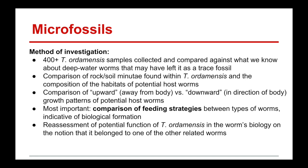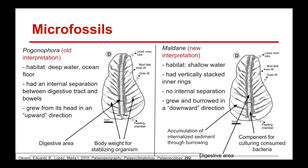The old interpretation was that Tassilia ordemensis was made by a creature in the Pogonophora class — a deepwater worm that lives near or inside the ocean floor. It has an internal separation between its digestive tract and its bowels, and it grew from its head in an upward direction. The puzzling area of the fossil is the sort of accumulated, hard area around its digestive tract, which according to the original interpretation served to add body weight and stabilize the organism.